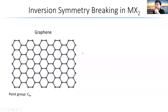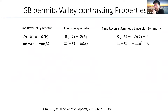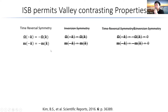What makes MX₂ a great candidate for valleytronics is that it has no inversion symmetry. For graphene, the point group is C₆ᵥ and we have an inversion center. However, for MX₂ the point group is D₃ₕ, which means there's no inversion center. Properties like Berry curvature and orbital magnetic moment are odd with respect to time reversal symmetry and even with respect to inversion symmetry. When both symmetries are preserved, they have to vanish, but without inversion symmetry we have valley-contrasting values for these properties.